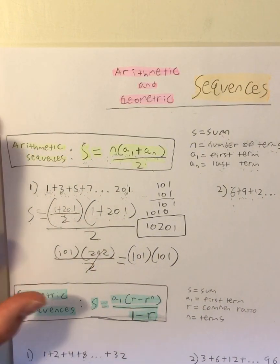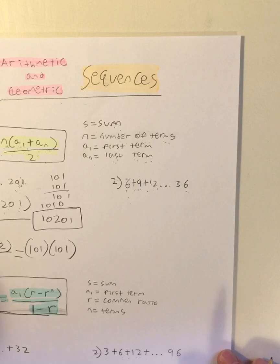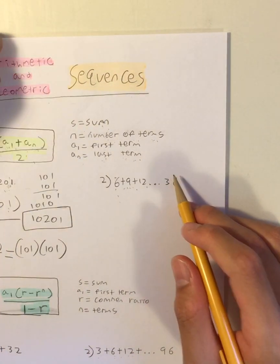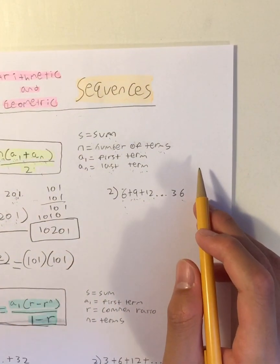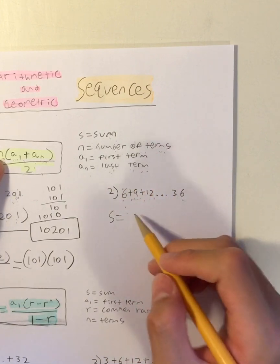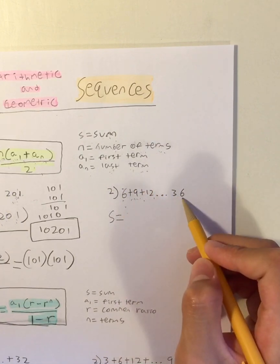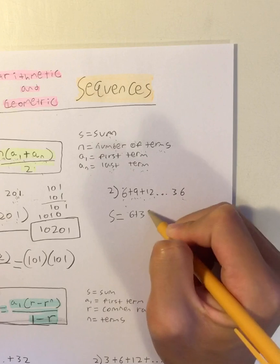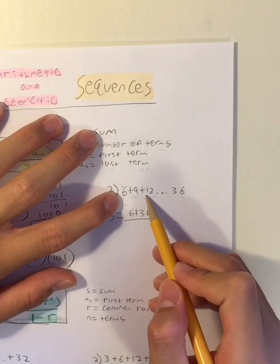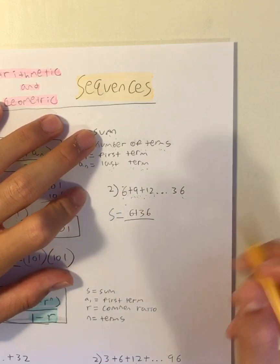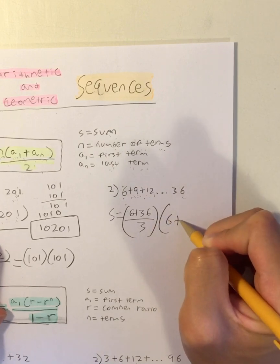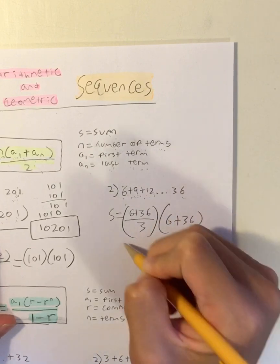So let's continue to our second example of arithmetic sequences. We have 6 plus 9 plus 12 all the way up to 36. Let's use the same process. We have to find the sum, which is equal to the number of terms — that's the first term plus the last term, 6 plus 36, divided by the common difference. What is the common difference? 6 plus 3 is 9, 9 plus 3 is 12, so the common difference is 3.